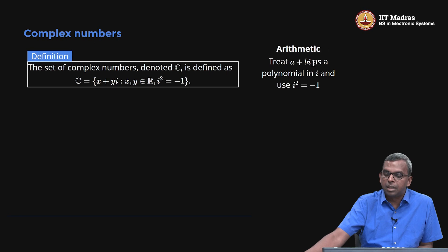To do arithmetic with complex numbers, you treat a plus bi as a polynomial in i and use i squared equals minus 1. This is the logic to do all arithmetic with complex numbers.